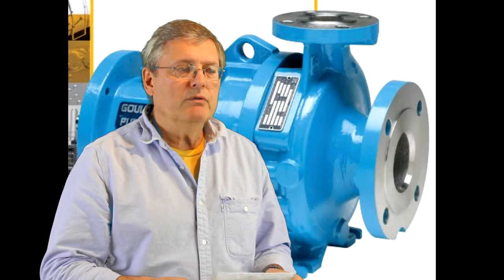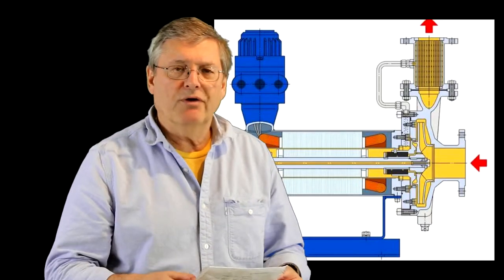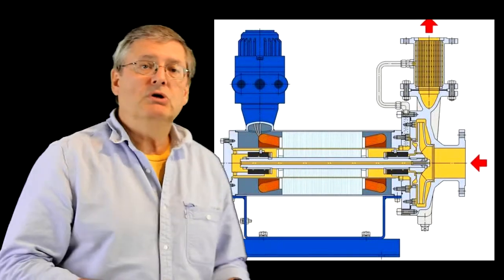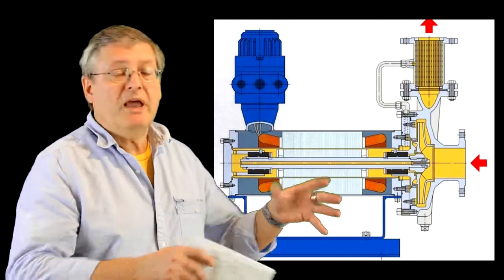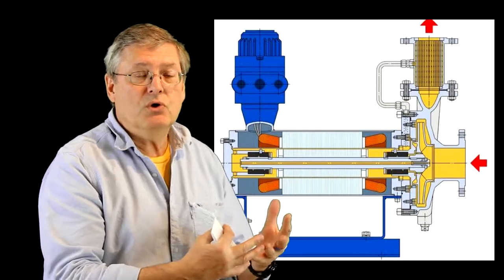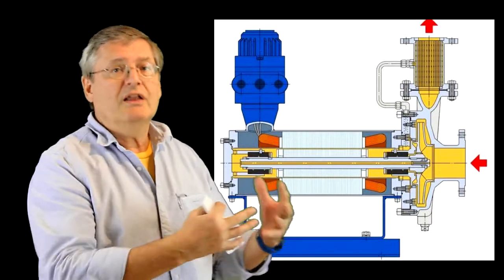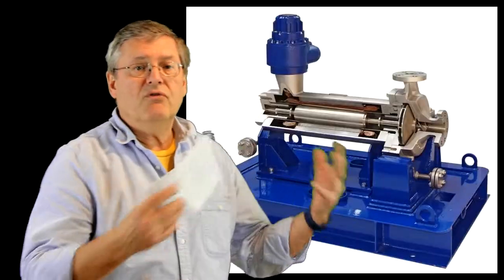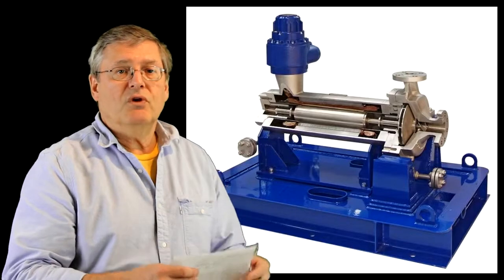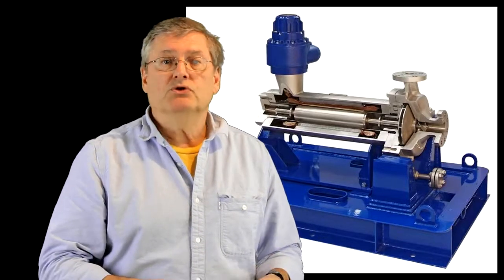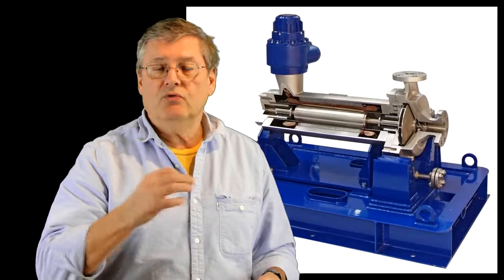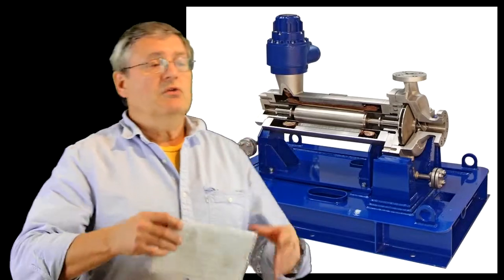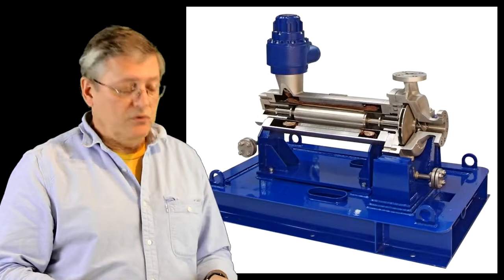If you want to go even safer than a mag drive pump, you would go to a can pump. In this case, everything is enclosed so the motor itself is inside a casing and it drives the pump internally so that you have absolutely no risk whatsoever of having a leakage. From a seal standpoint this would be the ultimate and probably you would use this on extremely dangerous liquids, maybe even very radioactive liquids or things of that nature.